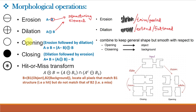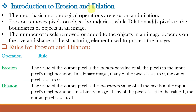The other morphological operations are opening, closing, and hit-or-miss transformation, which we will learn in coming video classes. Erosion and dilation are the most basic morphological operations. Erosion removes the pixels on the object boundaries while dilation does the opposite — it adds pixel values to the boundaries of objects in an image. The number of pixels removed during erosion or added during dilation depends on the size and shape of the structuring element used.